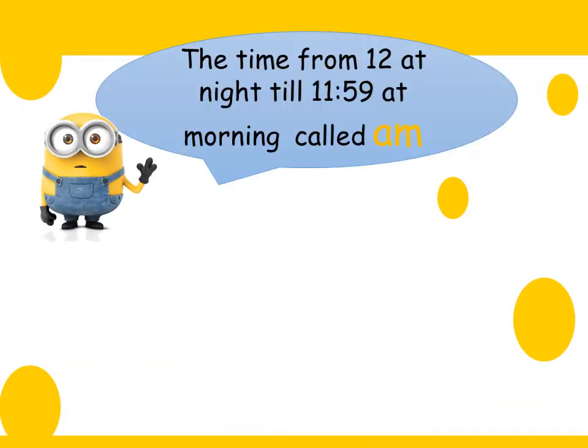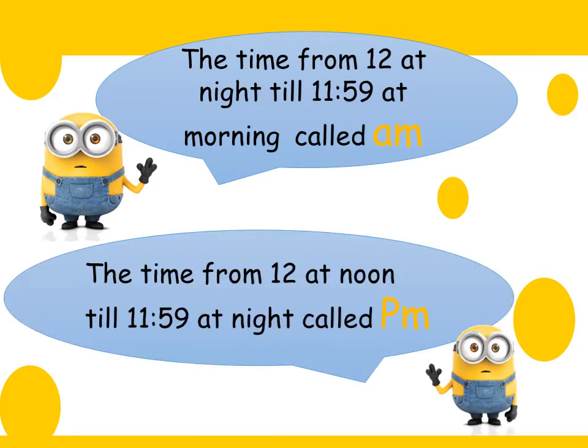Focus with me. The time from 12 at night till 11:59 in the morning is called AM. It's a new note for you. When I say the time is AM, it's from 12 at night up to 11:59 at morning. The remaining part of the day from 12 at noon up to 11:59 at night is called PM.